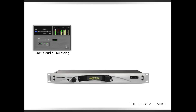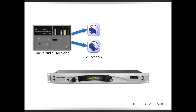Once the audio is done being processed with the Omnia audio processing, it then goes to two different encoders. The ProStream has these two encoders and they're completely independent except for their audio feed coming in. You can encode in MP3 or different flavors of AAC like full AAC, HE-AAC, or even the very popular HE-AAC v2, which is very popular for streaming because it's a low bit rate and yet it sounds really good. So you have two completely independent encoders.